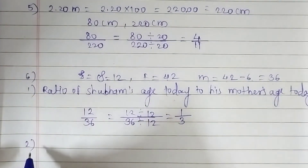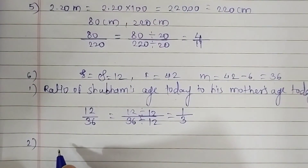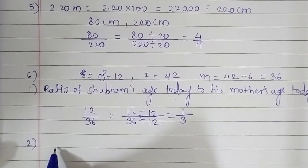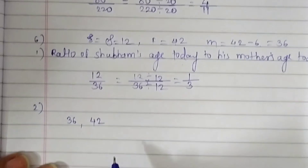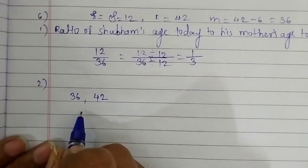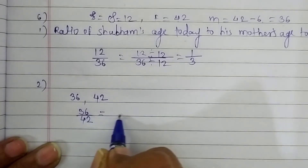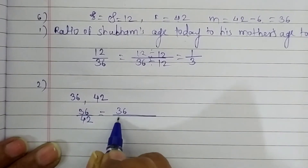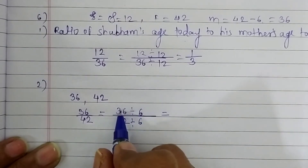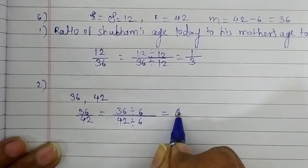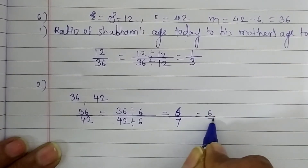Second question: ratio of Shubham's mother's age today to his father's age today. Mother's age is 36 and father's age is 42. Let's find 36 upon 42. We divide both by 6, since both numbers appear in the 6 times table. So the ratio is 6 upon 7.